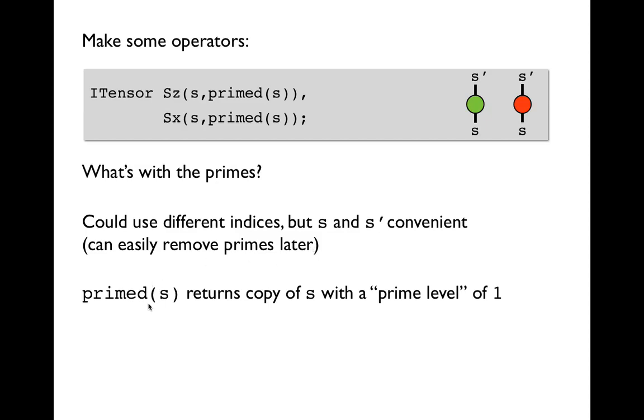So the function primed returns a copy of the index s, but now that copy will have a prime level of one. So internally in every copy of an index, there's an integer field that saves the prime level, and that prime level is default to zero, but it could be one, two, three, four, etc.